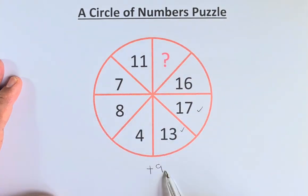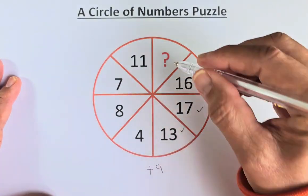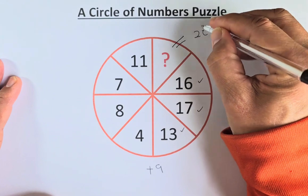And then the same thing, 7 plus 9 is 16. And then the last, of course, 11 plus 9, the question mark is going to be equal to 20.